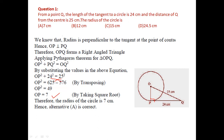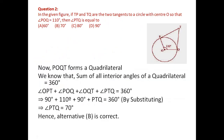They may ask you to find the radius of the circle. Question 2 is about angles. In this figure, TP and TQ are the tangents to the circle with center O.